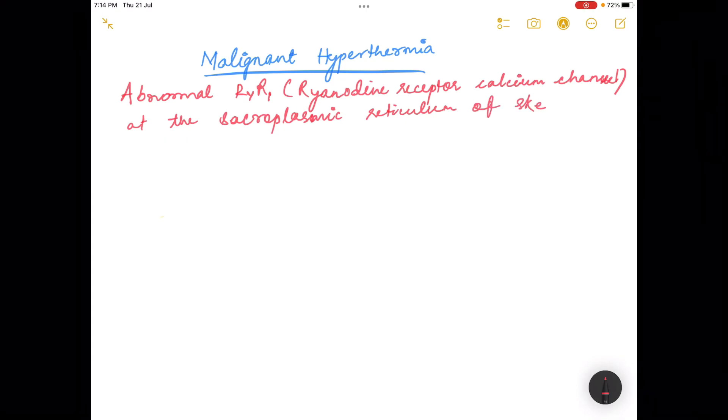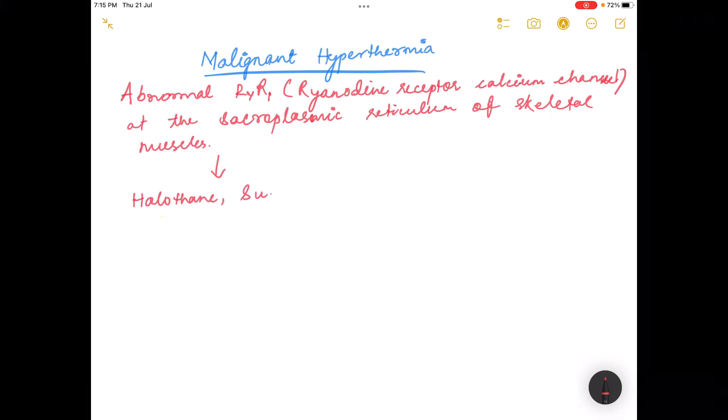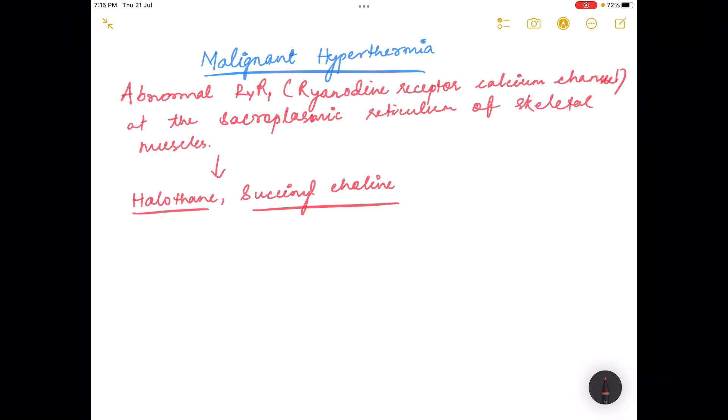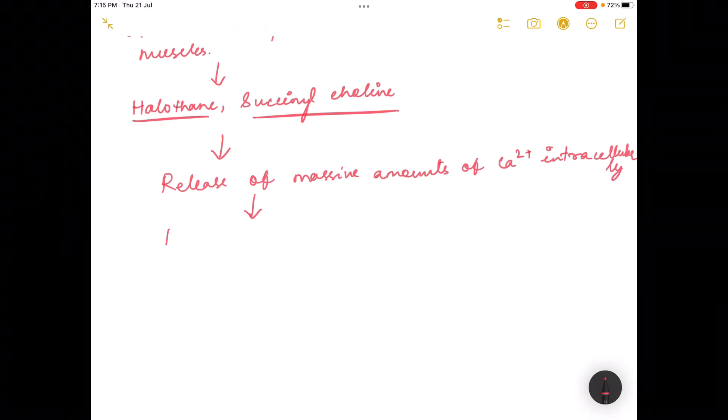of the skeletal muscles. When these channels are triggered by certain drugs like halothane and succinylcholine, there is release of massive amounts of calcium. This release of massive amounts of calcium will cause persistent muscle contraction and increase in heat production.